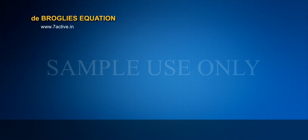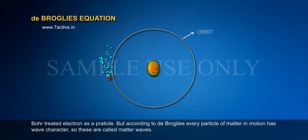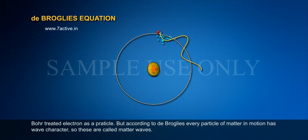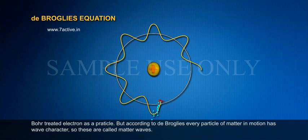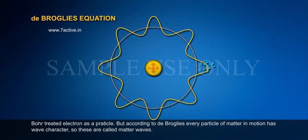De Broglie's Equation. Bohr treated electron as a particle. But according to de Broglie, every particle of matter in motion has wave character. So these are called matter waves.